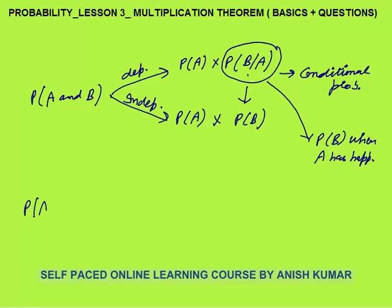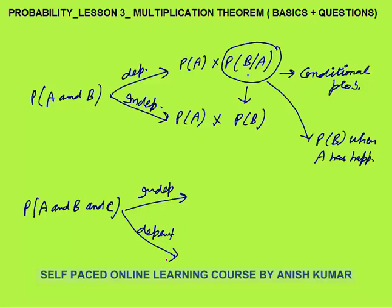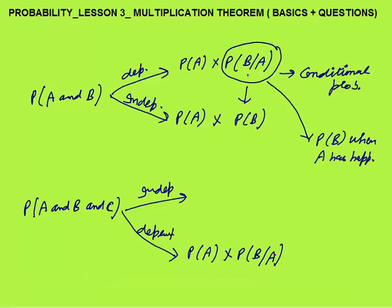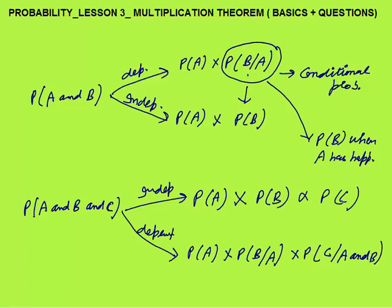Let me take another example — probability of A and B and C. In this case I am taking three events, with two cases: dependent and independent. Whenever events are dependent, it means that happening of B or C depends on whether A has happened. This will be probability of A into probability of B when A has already happened — the event will be dependent. Into probability of C when A and B both have happened. As events depend upon each other, the probability of C happening will depend on whether A and B have happened or not. In case of independent events, this will simply be probability of A into probability of B into probability of C.